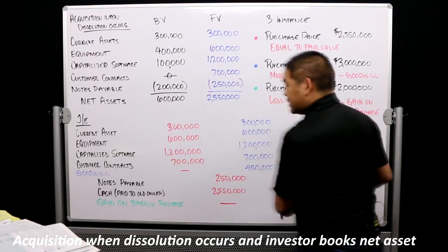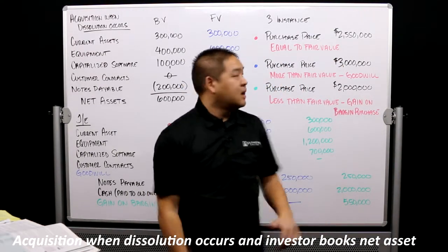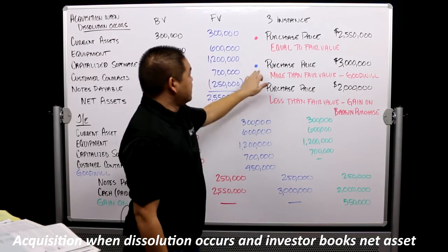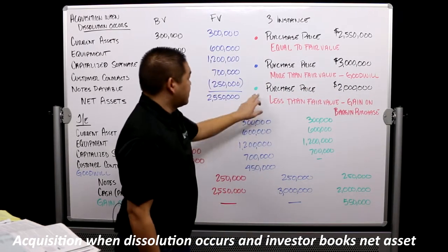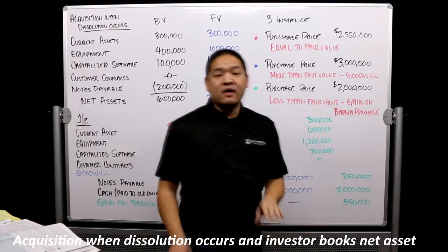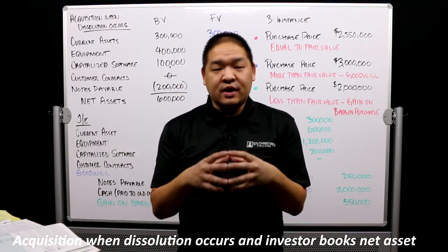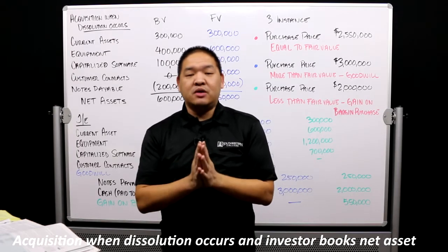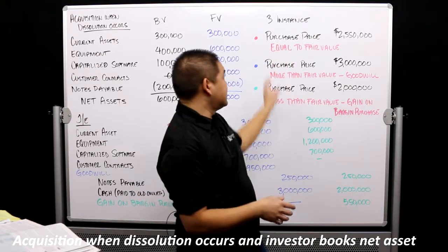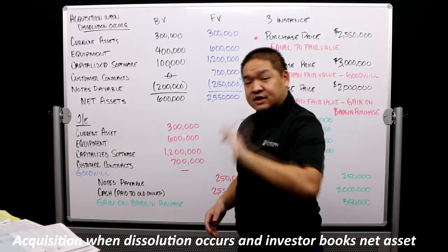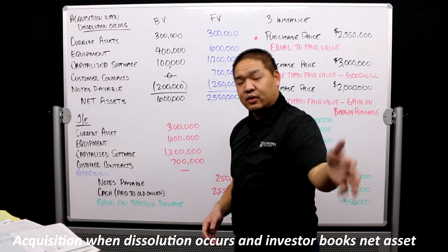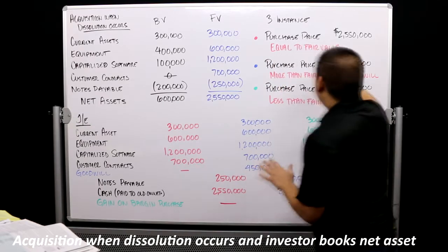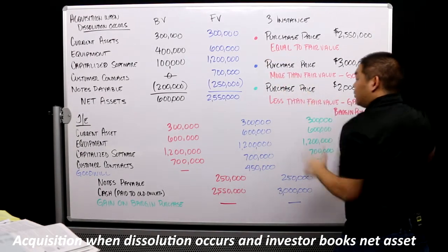Before I get to the journal entries, it's really simple - I've color-coded it. Red is purchase price at $2.55 million, blue is $3 million, green is $2 million. We have three sets of journal entries at the same time to show the contrasting views of these three situations. Consolidation: we're making the consolidation because we've acquired an investee and are now putting their assets on our books at what we purchased them for.